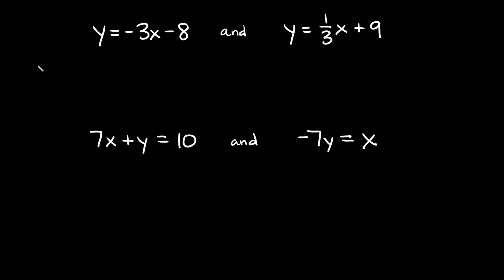Let's do a couple more examples using just the equations. Here we have y is equal to negative 3x minus 8, and y is equal to positive one-third x plus 9. The first thing you want to do is make sure both equations are in slope-intercept form — y equals mx plus b. Both of these already are, so the only thing we have to do is compare their slopes.